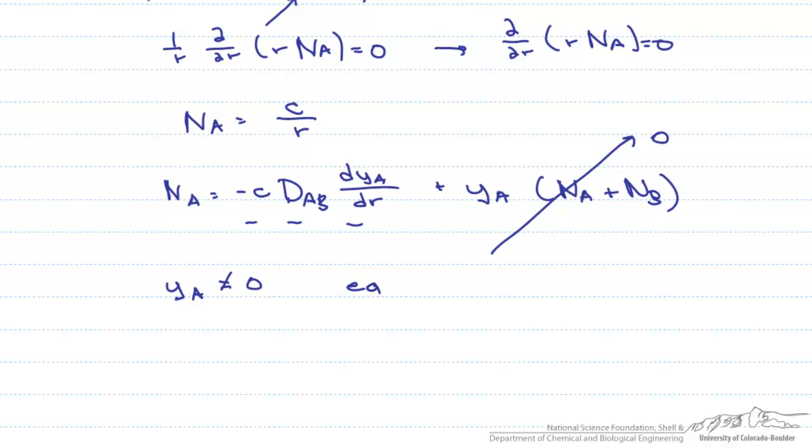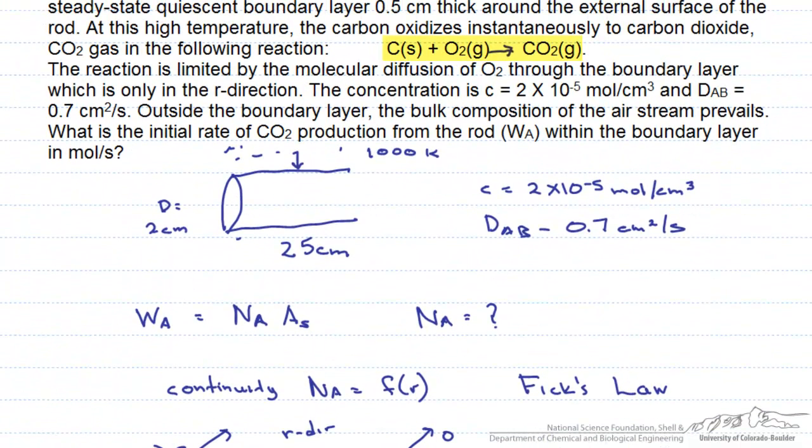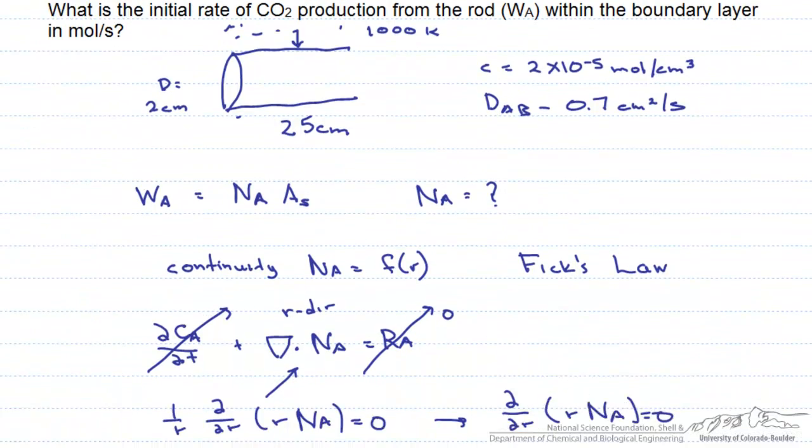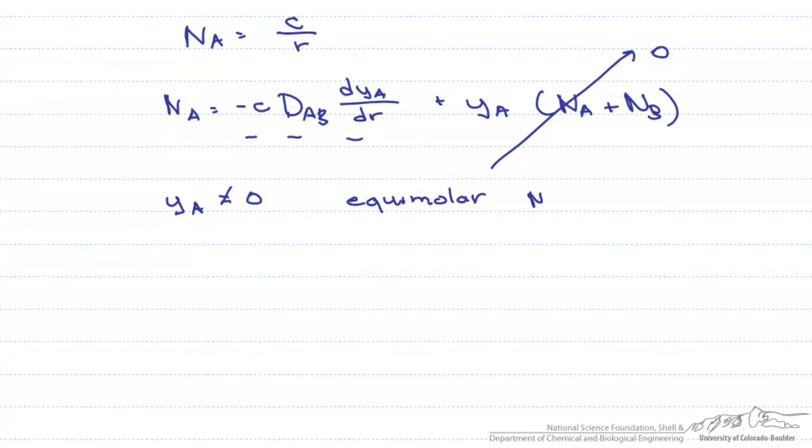The reason this term goes to 0 is that we have equal molar diffusion due to our reaction. If we go back to our reaction, our O2 and our CO2 are the same number of moles. That means N sub A equals negative N sub B, and that term goes to 0.